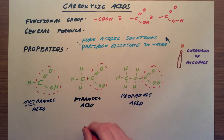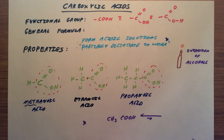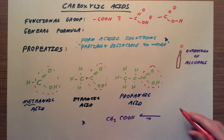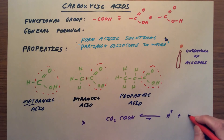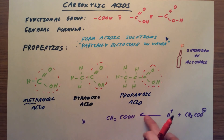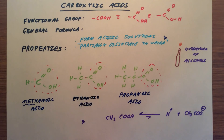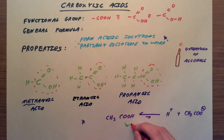If we take ethanoic acid, which we represent as CH3COOH, and dissolve it in solution — mix it with water — you actually get an equilibrium. It's a reversible reaction where an H+ ion separates from the rest of the structure. The equilibrium arrow going back is drawn much bigger than the arrow going forward because only a very small amount of the acid will dissociate. Unlike hydrochloric acid or sulfuric acid, which fully dissociate, ethanoic acid and other carboxylic acids only partially dissociate. They are what we call weak acids.